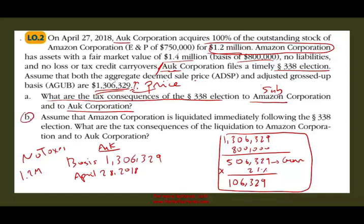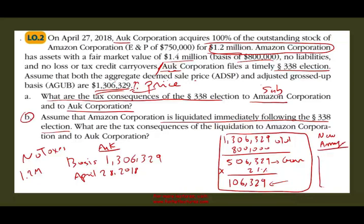Now, assume that Amazon is liquidated immediately following the 338 election. This is where we look at the mechanics further. After the election, Amazon deemed to have purchased their own assets. The old Amazon is gone and we now have a new Amazon. The new Amazon has assets with a basis of 1,306,329. In a sense, the new Amazon bought the assets from the old Amazon — old Amazon sold to new Amazon, then Oak bought the new Amazon.